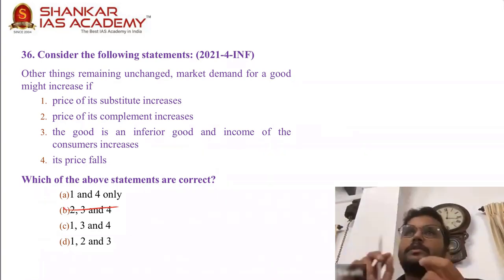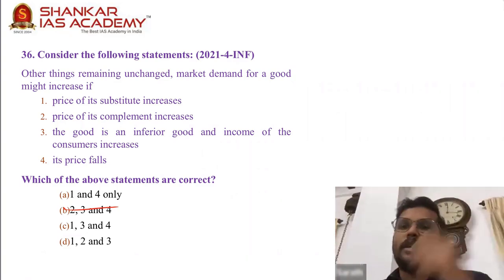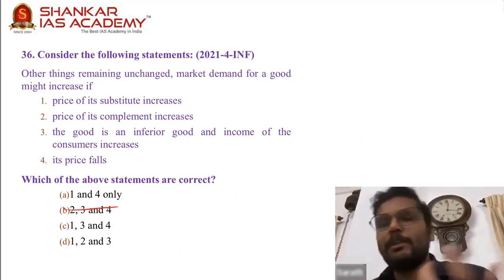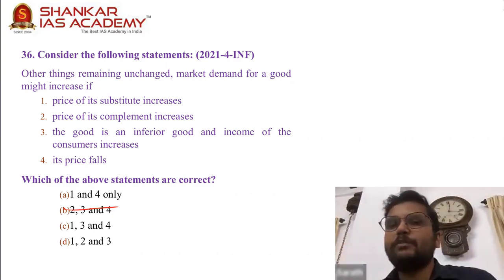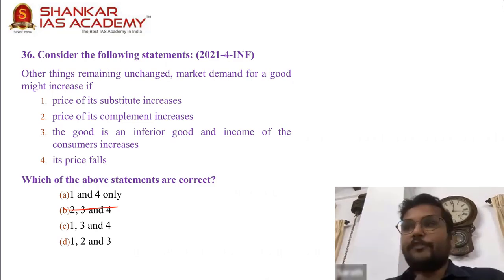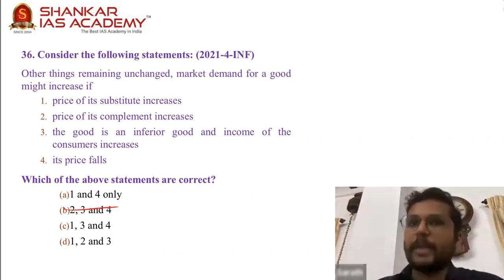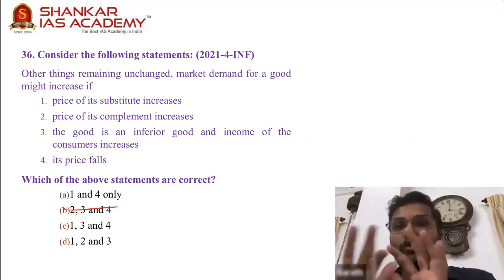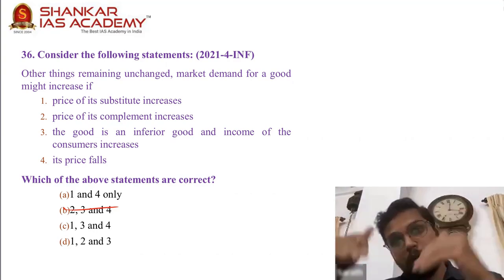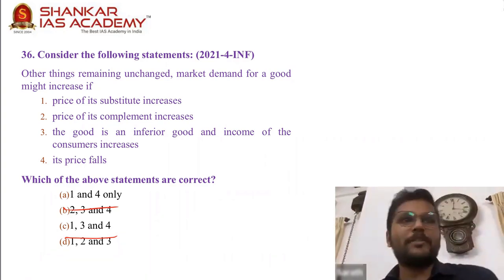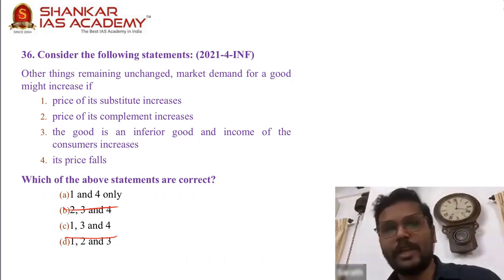Option 2: price of its complement decreases. A complement is something you cannot use without the other — car and fuel, pen and ink. If ink becomes very expensive, demand for pens will drop because you cannot use a pen without ink. So price of complement increases means demand will go down — option 2 is not part of the answer. Option 4: if the price of the commodity itself falls, demand will increase — someone gives a discount, we might buy things we don't even want. So 4 is definitely part of the answer.